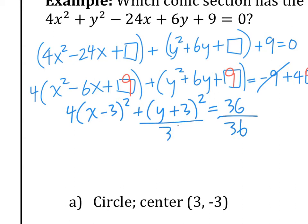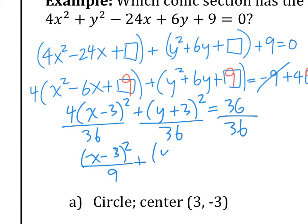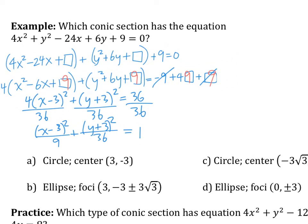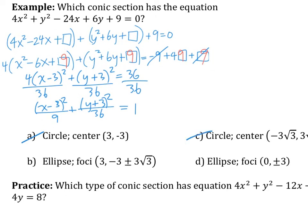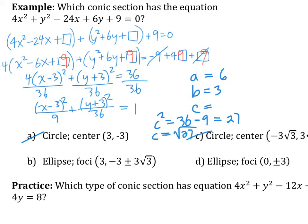So we're going to divide everything by 36, and now we're in standard form. The denominators are not the same, so figure out which answer choice A, B, C, or D is correct. It's not a circle. A equals 6 and B equals 3. C squared equals 36 minus 9, which is 27, so C equals square root of 27, which simplifies to 3 root 3 from the center at (3, −3). There's only one answer with square root 3 in it, so the answer is B.